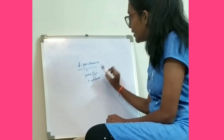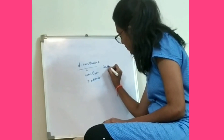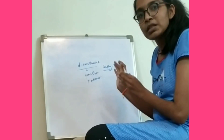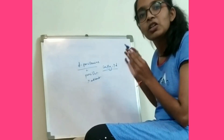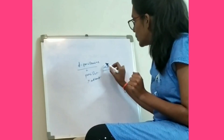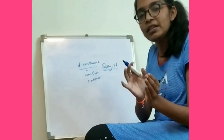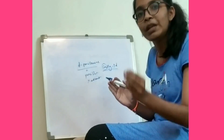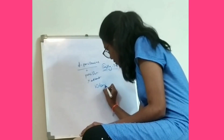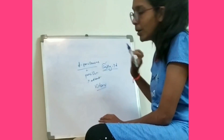D-Penicillamine is used to chelate copper, mercury, and lead. Hence, it is used in copper, mercury, and lead toxicities. It is also used in Wilson's disease, because in Wilson's disease copper gets accumulated in brain and liver. To remove the copper from brain and liver in Wilson's disease, we use D-Penicillamine.